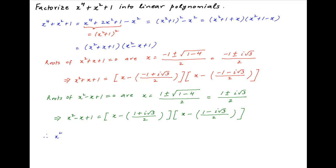Therefore, the given expression x to the power 4 plus x squared plus 1 equals (x squared plus x plus 1) times (x squared minus x plus 1).